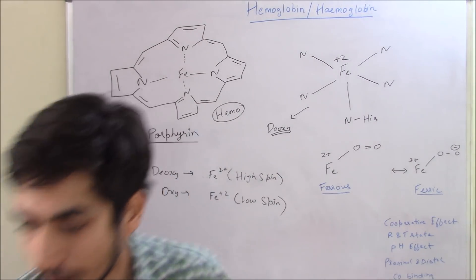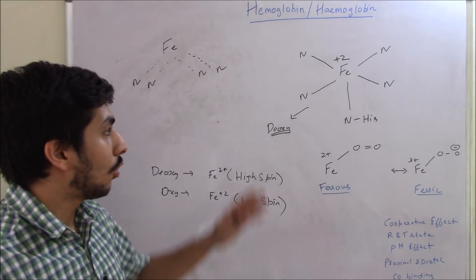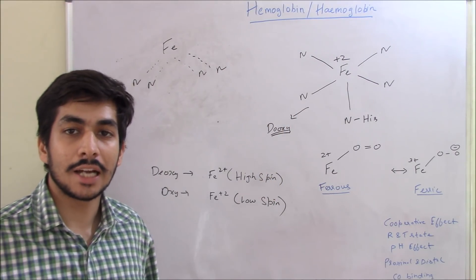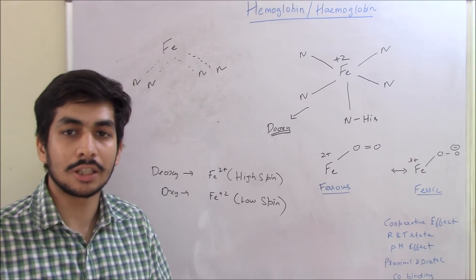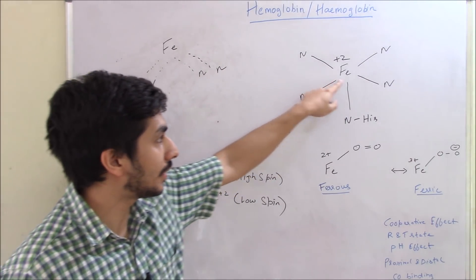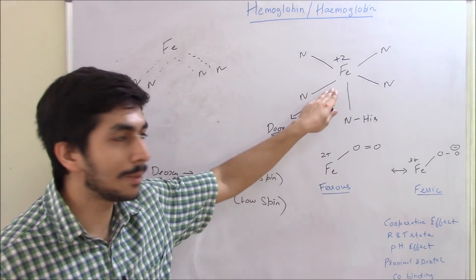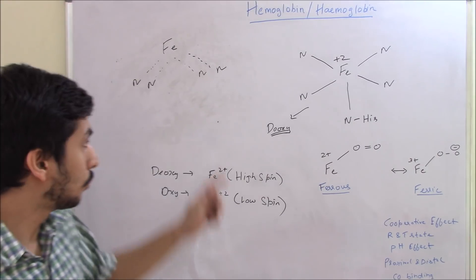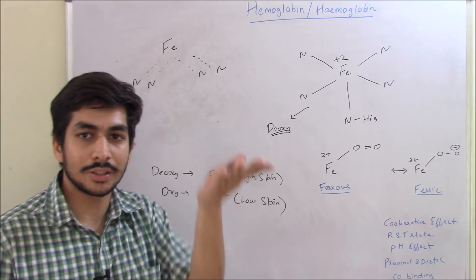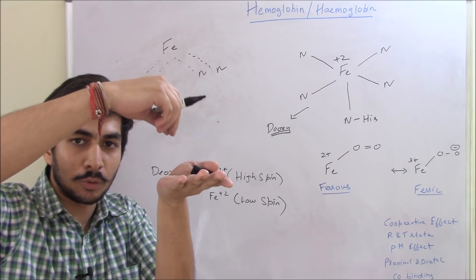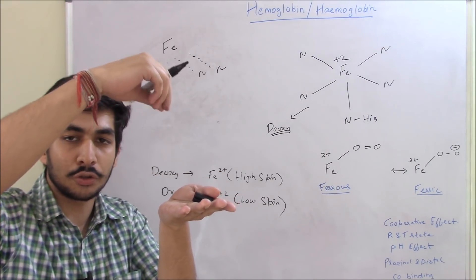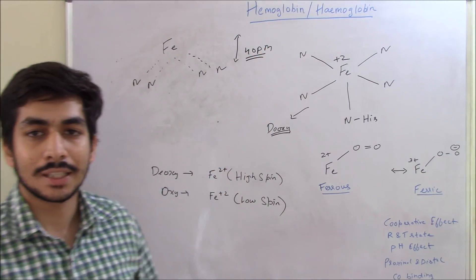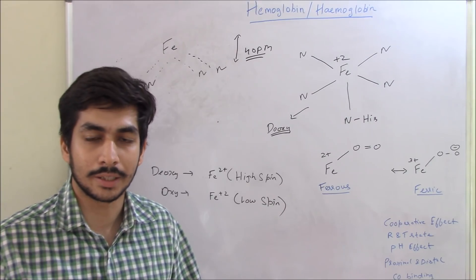In the deoxy form, the porphyrin ring's four nitrogens are all in one plane. However, iron in its high spin state is a little bigger in size — it cannot fit inside the cavity of the porphyrin ring. Because iron in the +2 high spin state is quite large, it lies above the plane of the nitrogen atoms. This distance of iron from the plane of the nitrogens is 40 picometers.